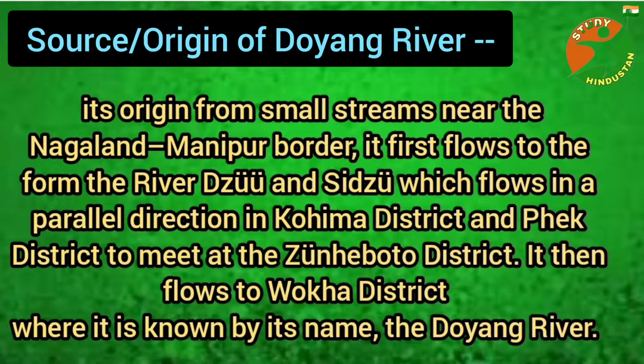It first flows from the rivers Dizu and Sidju, which flow in a parallel direction in Kohima district and Phek district, to meet the Zunheboto district. It then flows to the Wokha district, where it is known by the name Doyang river.